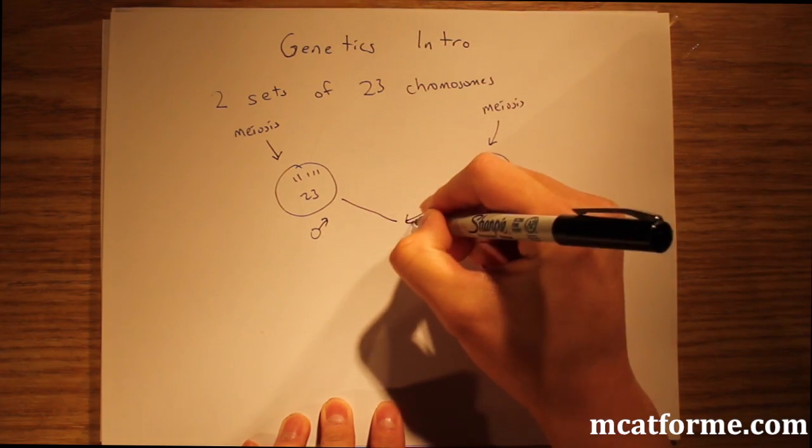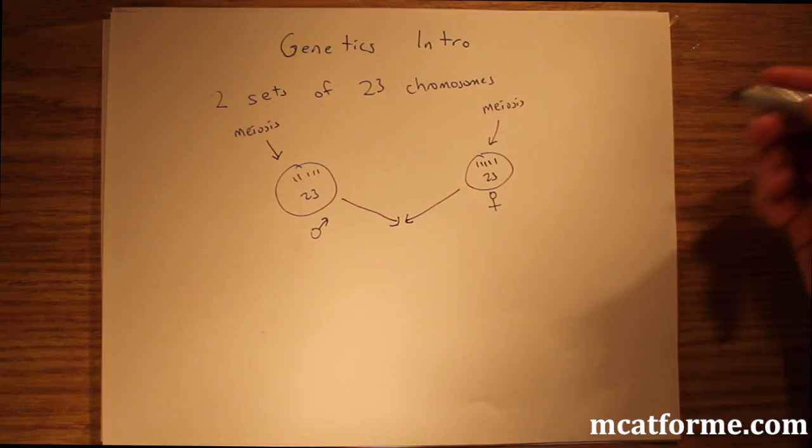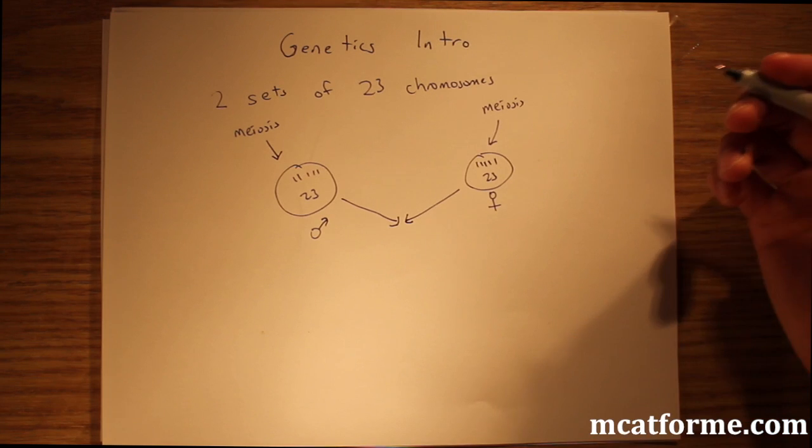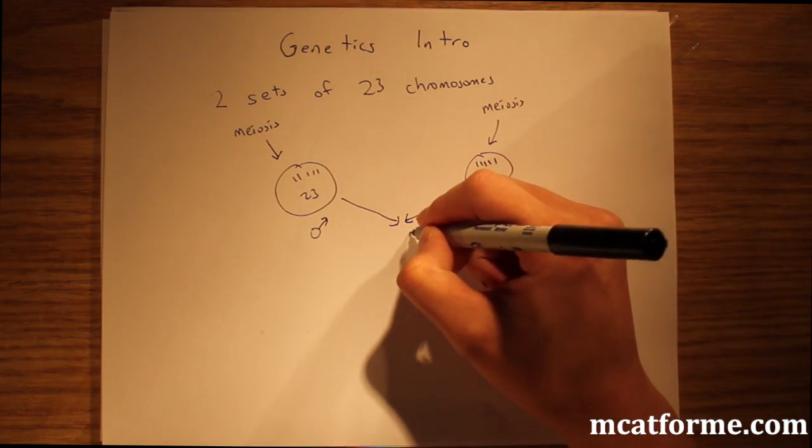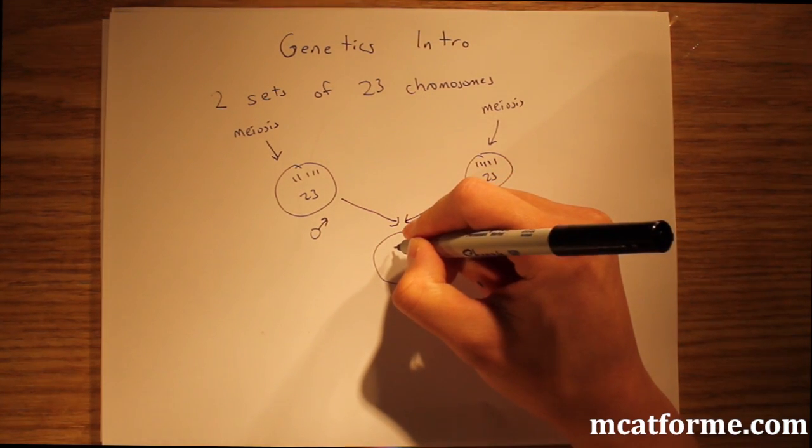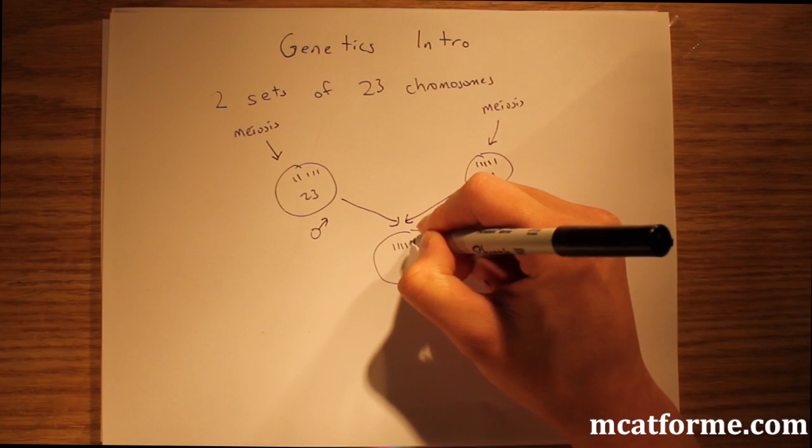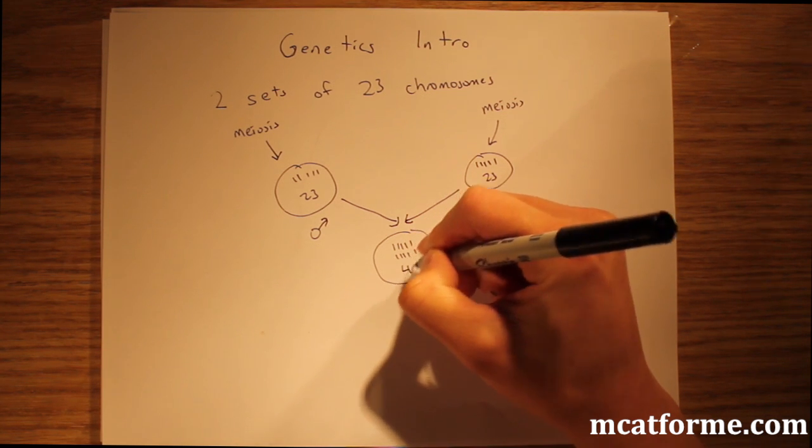When they have a kid, when they have a zygote, which is once fertilization occurs, you make a zygote, you're going to get something that has 46 chromosomes.